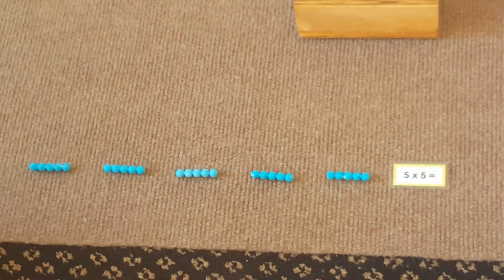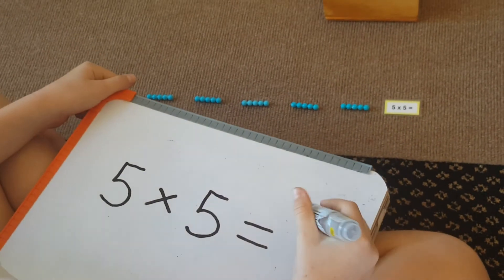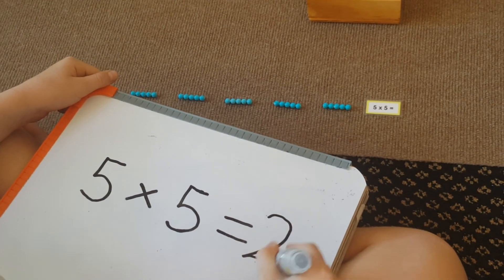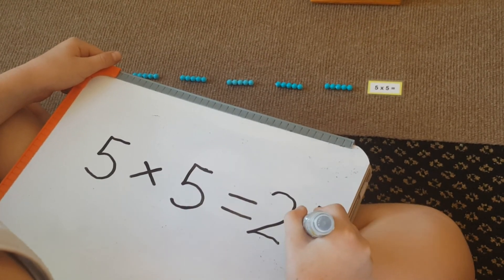Let's record your answer. Five times five equals twenty-five.